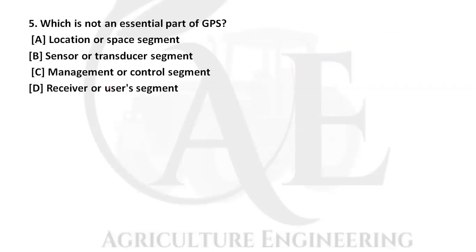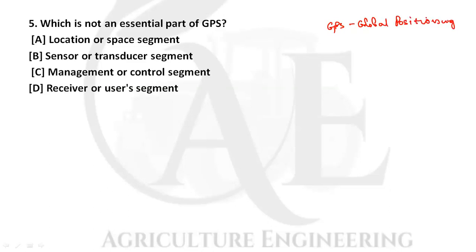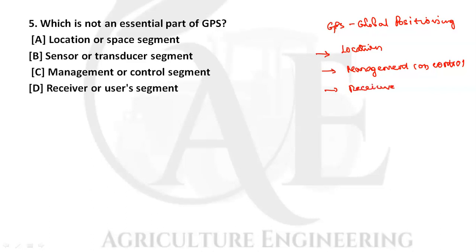Next question: which is not an essential part of GPS? The essential segments of GPS include the location or space segment, the management and control segment, and the user or receiver segment. The sensor or transducer segment is not used in GPS, so option B is the correct answer.